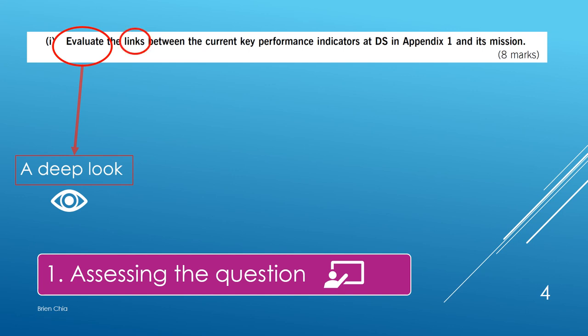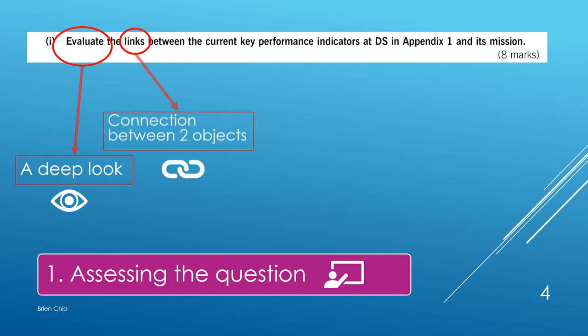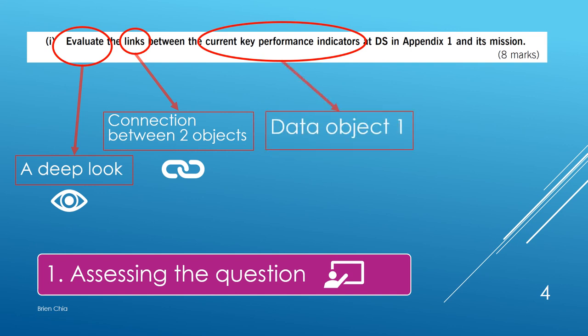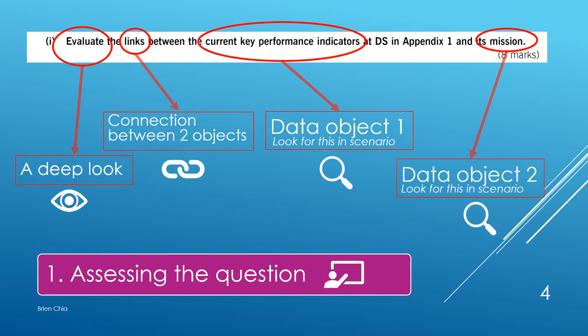The second important word in the question is links, which means there is a connection between two different objects. The third key phrase is current key performance indicators — a data object you will look for within the scenario. And the last important element is mission, which is the second data object you will also need to find in the scenario.